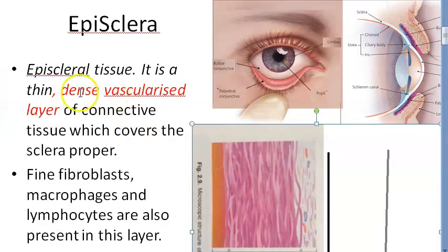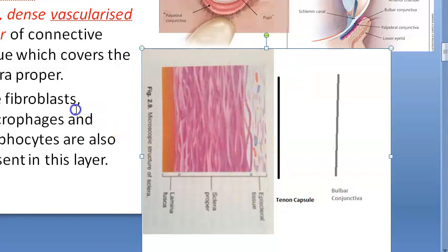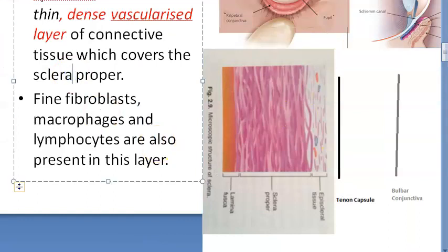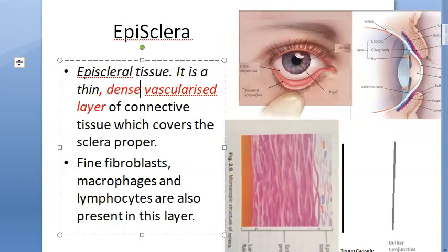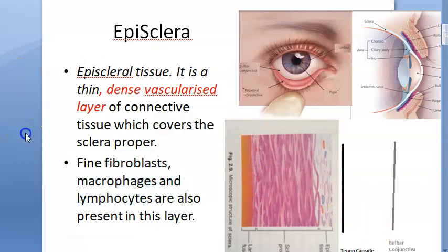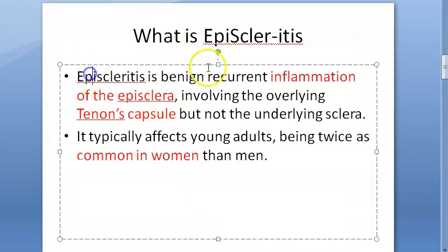The episclera is a dense vascularized layer — it's a very thin layer but has a lot of vascularity with many blood vessels. So inflammation of this will be episcleritis. This episclera is a dense vascularized layer of connective tissue which covers the sclera proper. There will be fibroblasts, macrophages, and lymphocytes in this layer.